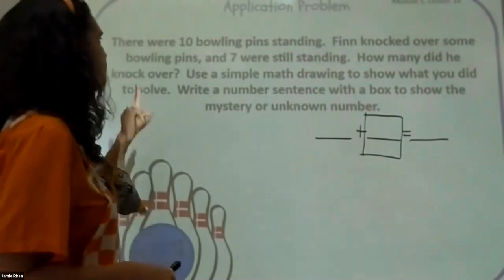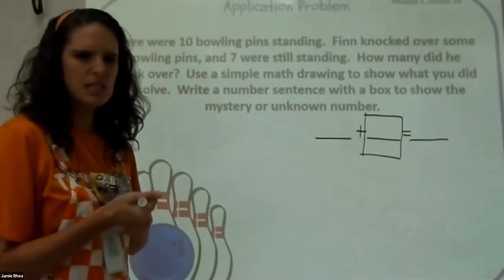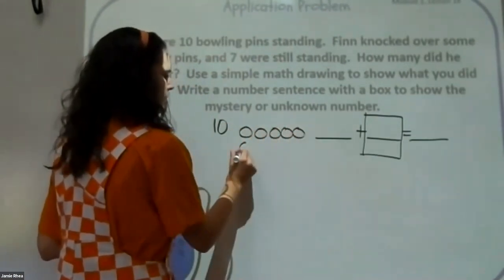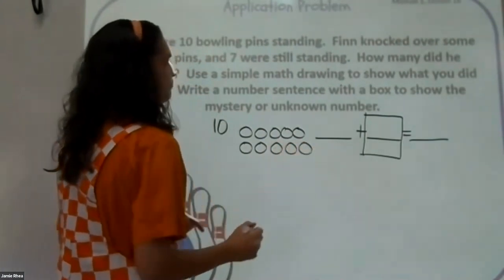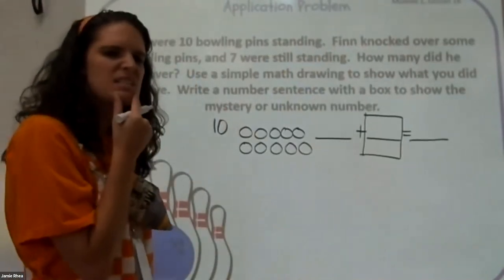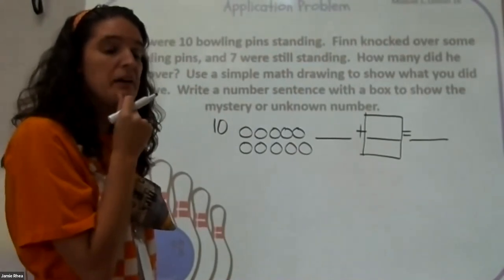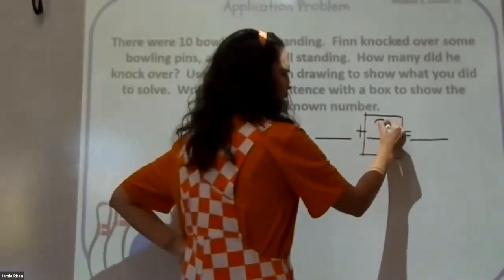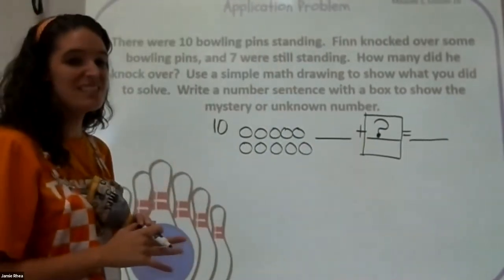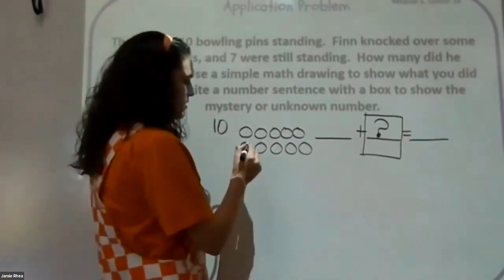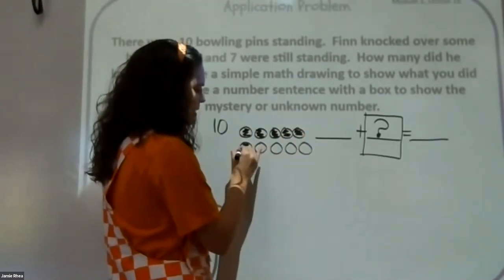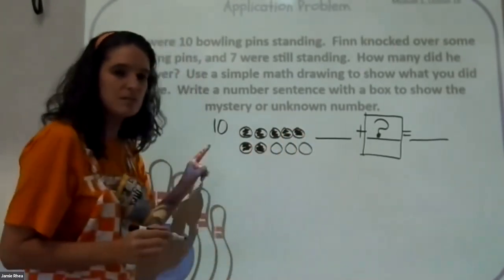Let's find our important information. There were 10 bowling pins standing — so I'm going to draw 10: one, two, three, four, five, six, seven, eight, nine, ten. Ben knocked over some bowling pins — we don't know how many yet, but we know there are some. Seven were still standing, so I'm going to color in seven: one, two, three, four, five, six, seven. There are my 10 bowling pins and the seven that are still standing.